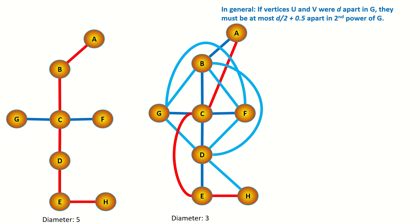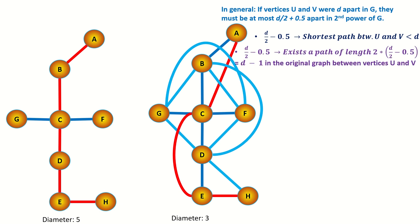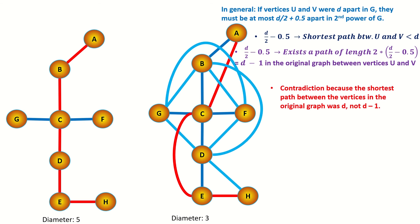If they were less than that many steps apart in the second power graph — say d over 2 minus 0.5 steps apart — that would imply there was some path shorter than d steps between those two vertices in the original graph. Why? Because even in the most extreme case, if every edge in the d over 2 minus 0.5 length path in the second power was connecting pairs of vertices that used to be 2 apart in the original graph, that would still mean there would have to be a path of length d minus 1 between those vertices in the original graph — which is a contradiction since the shortest path was assumed to be d.